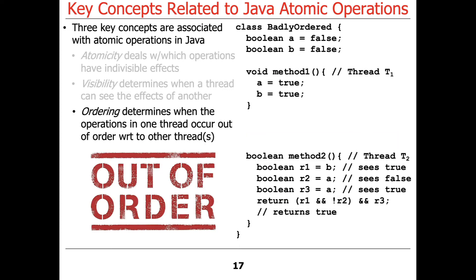And the third issue here is a really crazy one, which makes your brain spin a bit. And this is ordering, which determines when the operations in one thread occur out of order with respect to other threads. So here's the code. This is called badly ordered. Once again, what not to do. And here we have two fields, both Booleans, A and B, initialized to false, belt and suspenders, as we saw before.